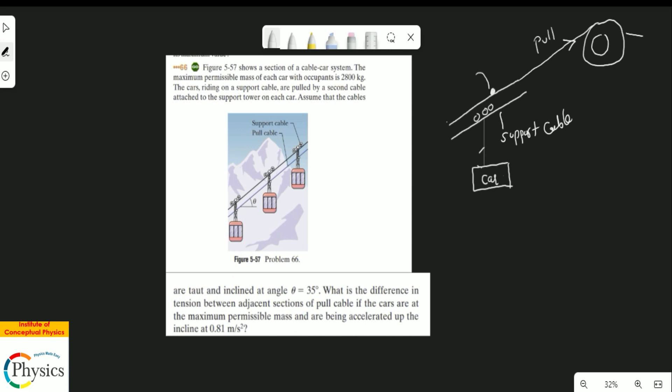This is your support cable or wire, and then there is a pull coming from this wheel at the top of the mountain. There are two cables: the support cable and the pull cable.